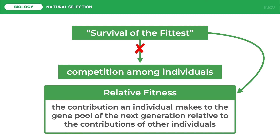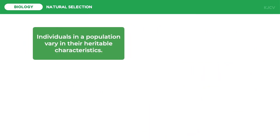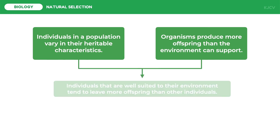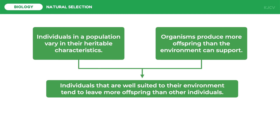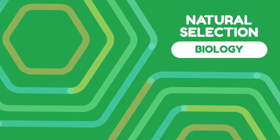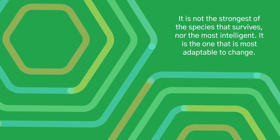To summarize this lesson, let us review the principles of natural selection. Individuals in a population vary in their heritable characteristics. Organisms produce more offspring than the environment can support. With these principles at play, individuals that are well suited to their environment tend to leave more offspring than other individuals. Over time, favorable traits accumulate in the population through natural selection.